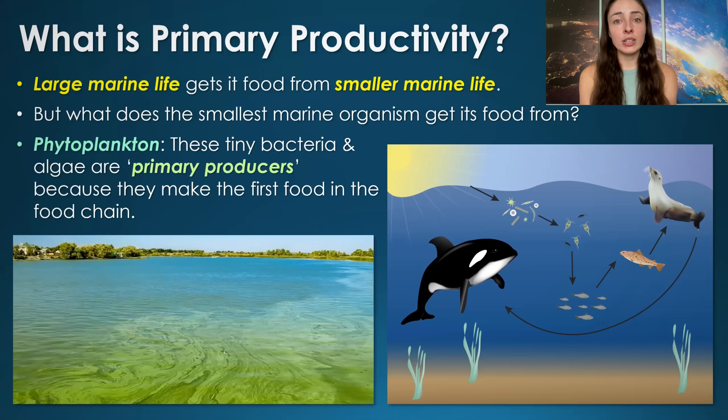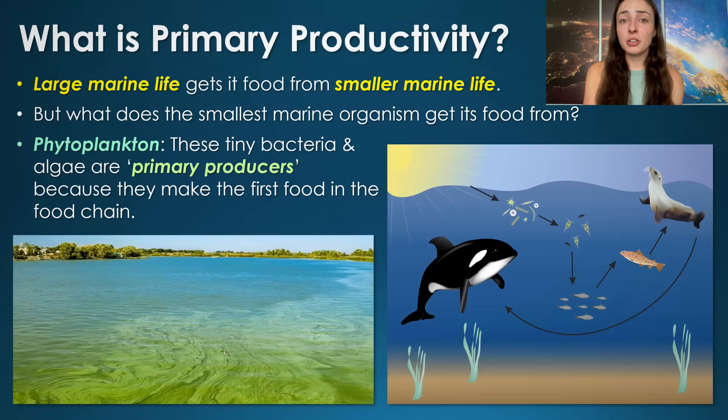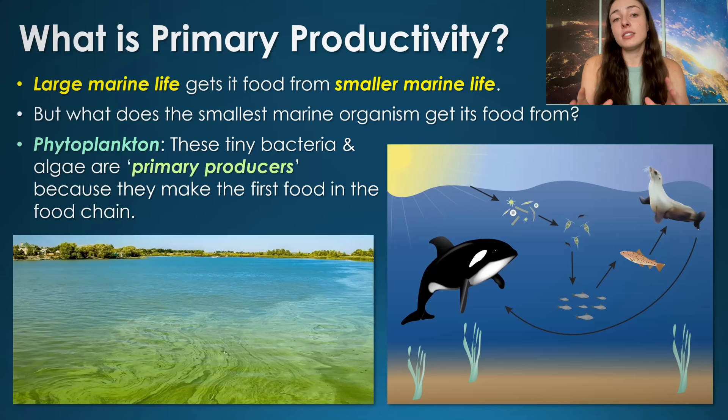The smallest, bottom-of-the-food-chain organisms in the ocean are called phytoplankton, and they include bacteria and algae at the ocean surface. Because these organisms photosynthesize and get their carbon from inorganic carbon dioxide rather than organic sources, they are called autotrophs — they produce their own food. All other animal life and bacteria that have to eat organic matter to get their carbon, like ourselves, are called heterotrophs.